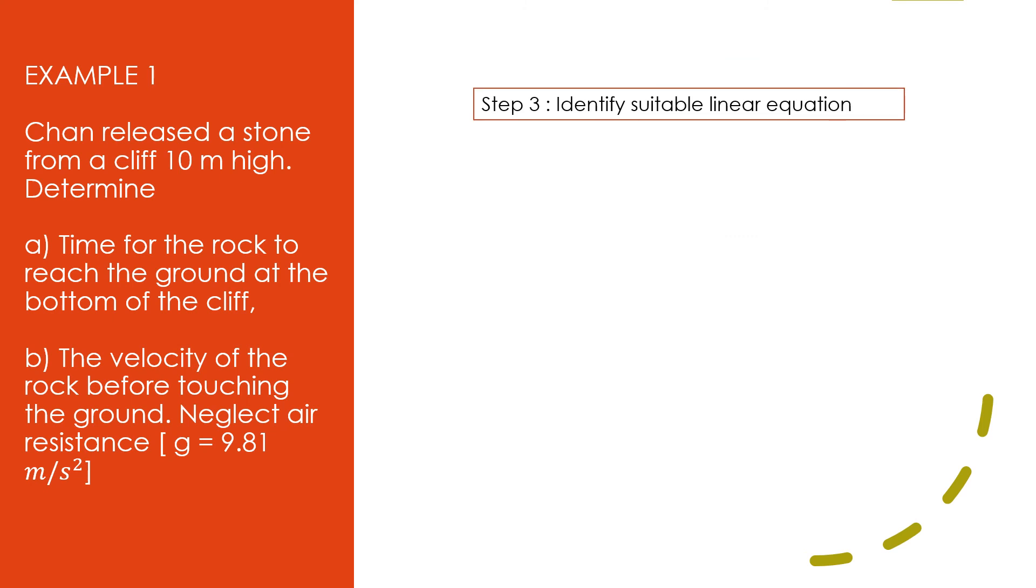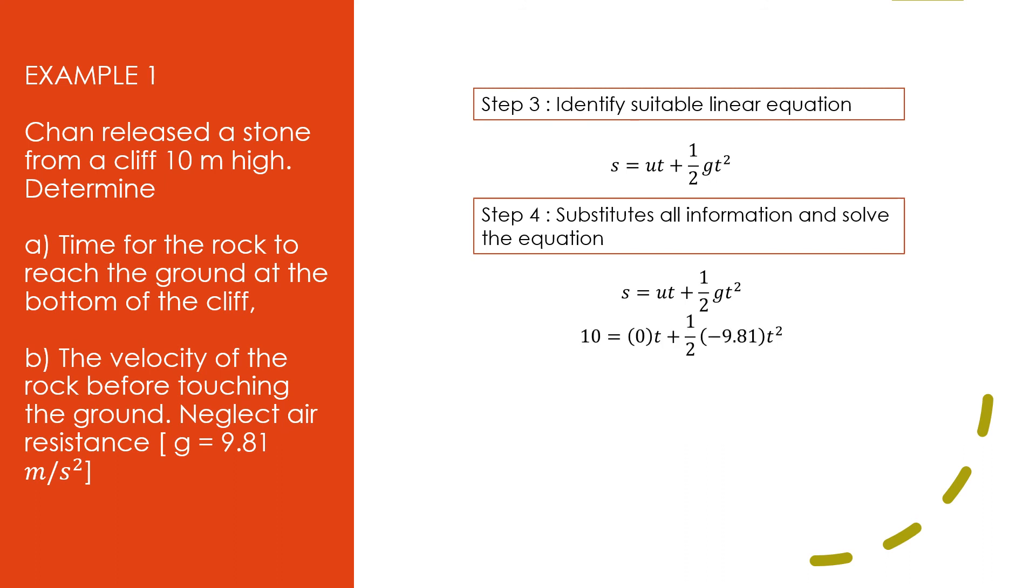Step 3, identify suitable linear equations. So, we choose s = ut + (1/2)gt² for equation A. Step 4, substitute all the information and solve the equation. So, we substitute all the information in the linear equation. So, s will equal 10, u = 0, t is our subject, g = -9.81. So, t will equal ±√(-20/-9.81). So, t = ±1.43 seconds. So, t = -1.43 is not taken into account because there is no negative in time.